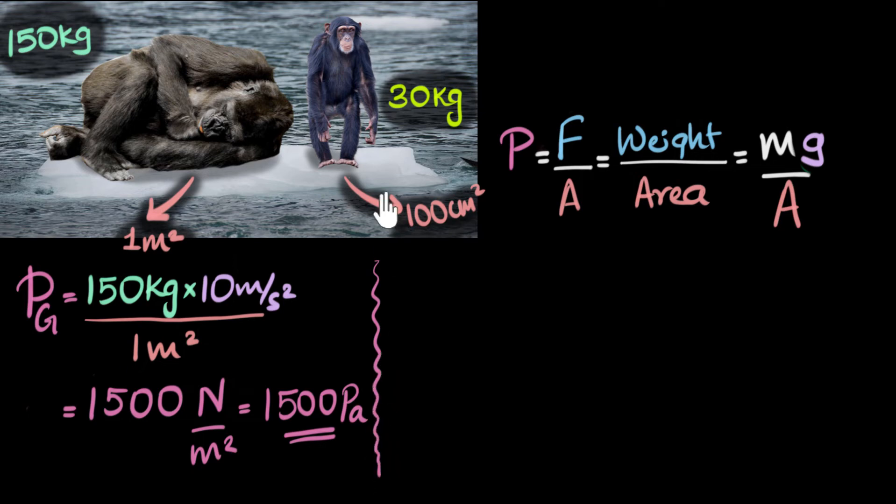Okay? Now let's do the pressure due to the chimpanzee. And if you had not tried this before, again, now would be a great time to pause and try it. A small thing over here is, the area is in centimeter squared. So we need to be a little bit careful before we compare. Okay? Let's do it. So the pressure due to the chimpanzee on the ice, that's called Pc, C for chimpanzee.